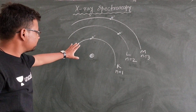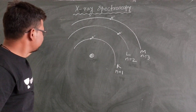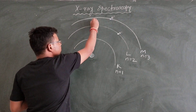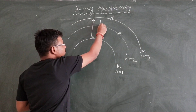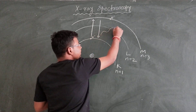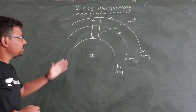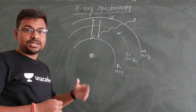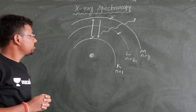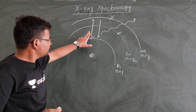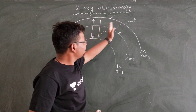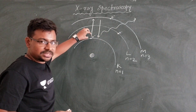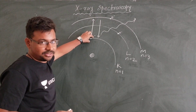We already studied in class 12 board exams that when you provide a certain amount of energy, the electron gets excited and comes back to its original level after de-excitation, releasing a certain amount of energy. That energy may correspond to a fixed wavelength — it may be in the visible region, UV region, etc. But I want to create this electromagnetic transition — by knocking out the electron, meaning I want to completely remove this electron. How can it be done?